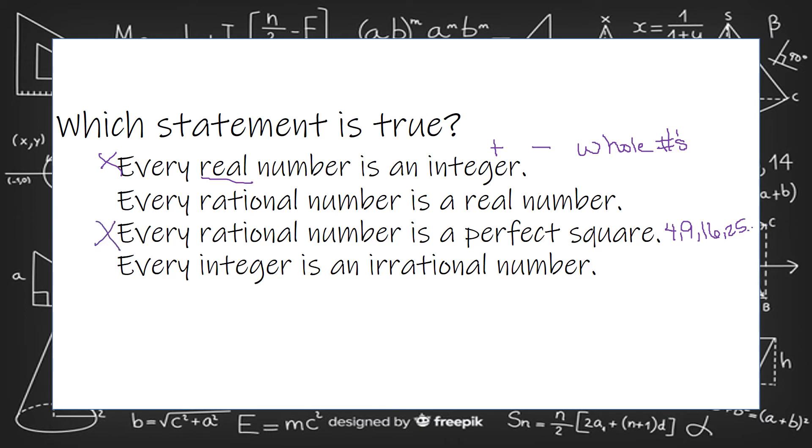Every integer is an irrational number. Well, the definition of integer is that they are a rational number. So that can't be it. So that leaves you with this. Every rational number is a real number.